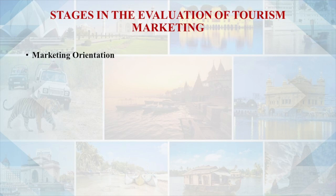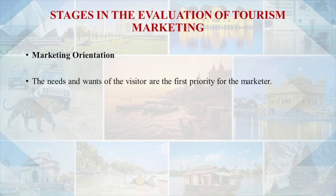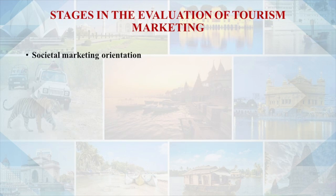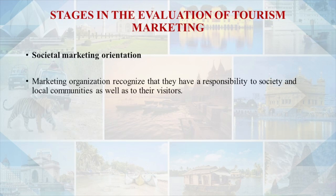Stages in the evaluation of tourism marketing: First is marketing orientation — the needs and wants of visitors are the first priority for the marketer. Second is sustainable tourism development — an approach that focuses on satisfaction of visitors' needs and wants while respecting the long-term interest of the community. Third is societal marketing orientation — marketing organizations recognize their responsibility to society and local communities as well as to their visitors.